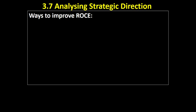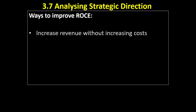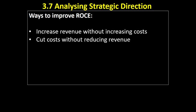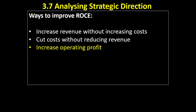How could we improve return on capital employed? Well, if we increase revenue without increasing costs, or if we cut costs without reducing revenue, those are essentially ways of increasing our operating profit. There are hundreds of ways a business might try to achieve those targets, but that's the basic idea. If we can improve operating profit and get more money without increasing capital employed, that will improve our return on capital employed.